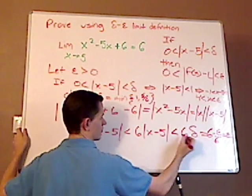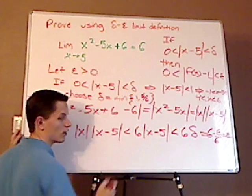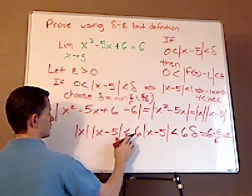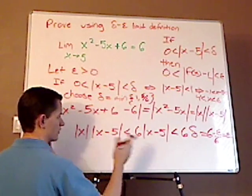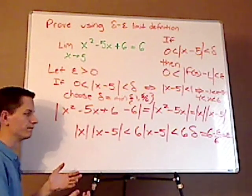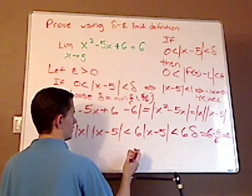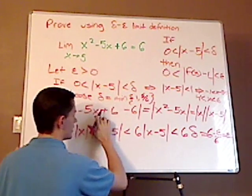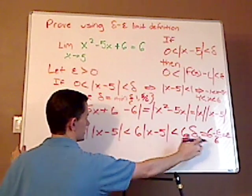Notice that less than is going in the same direction. You want to be consistent with that. So, if it goes the other way, you're not proving anything. It has to be consistent. So, this is less than epsilon.